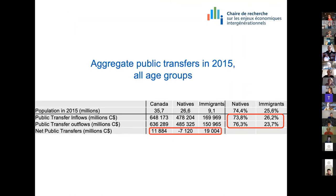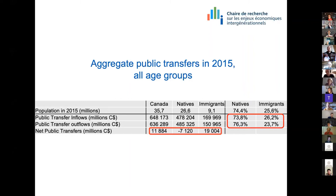The first big result: in 2015, looking at all age groups together, whereas natives have a net contribution of 7 billion dollars, immigrants have a net cost of 20 billion Canadian dollars. So basically the negative net public transfers for all of Canada are explained by immigrants. Whereas immigrants represent one-fourth of the population, they receive more than one-fourth of public transfer inflows and make less than one-fourth of public transfer outflows.